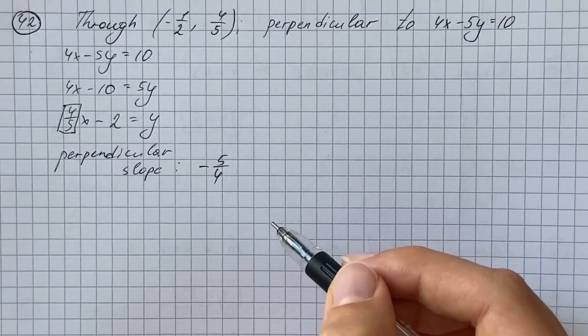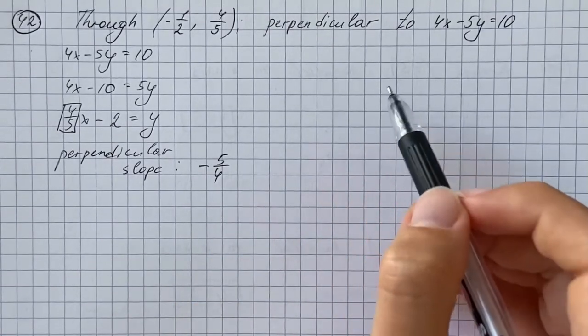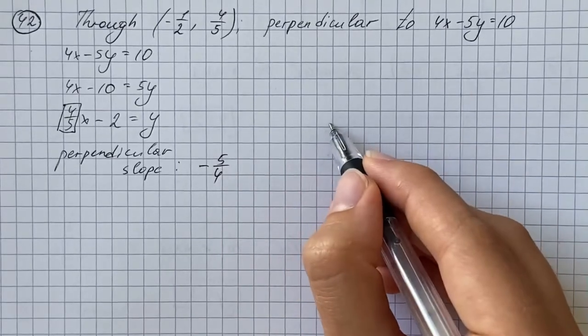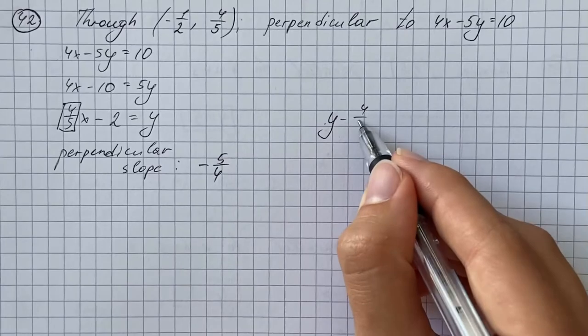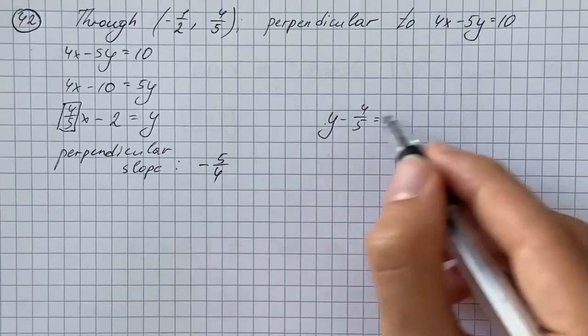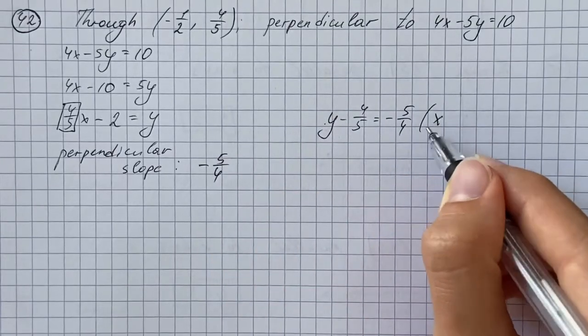So now I'm going to use point slope formula to find the equation for this line and that's going to be y minus the y coordinate which is 4 fifths equals the slope which is negative 5 over 4 times x minus